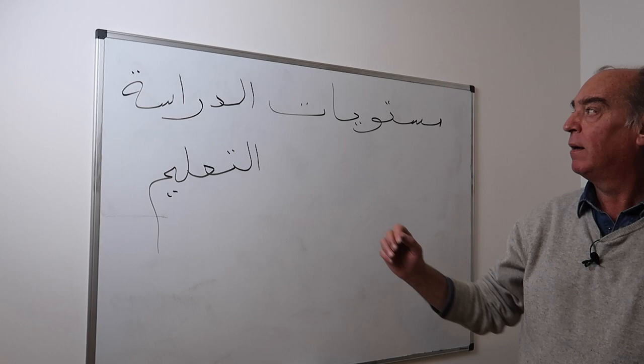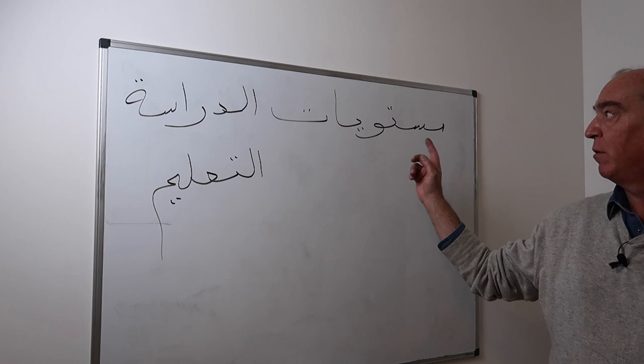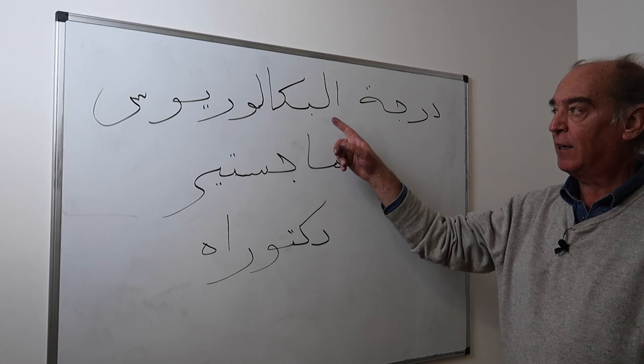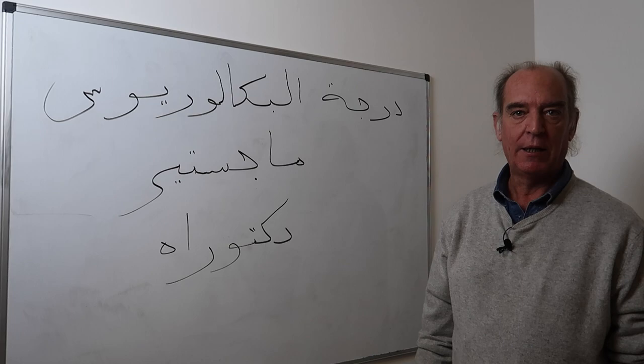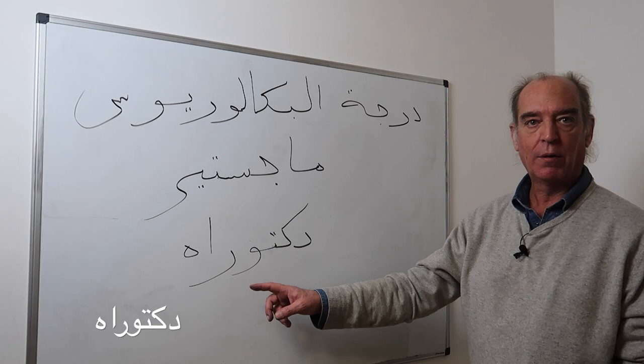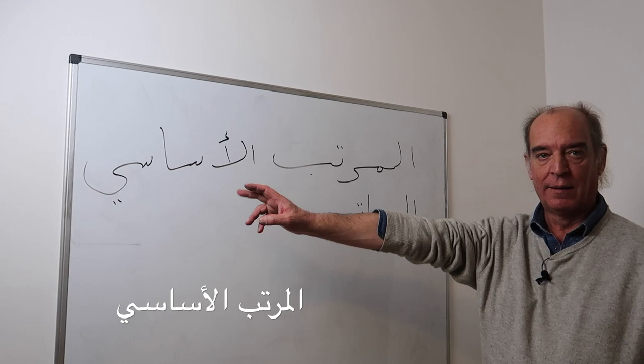'Mustawayat al-dirasa' means 'study levels' or 'levels of study.' You may also hear 'mustawayat al-talim.' The word 'daraja' means level or degree. 'Daraja al-bakalawyus' — bachelor's degree; 'daraja al-majistir' — master's degree; and 'dukturah' — a PhD.